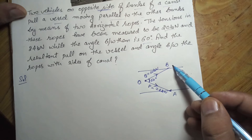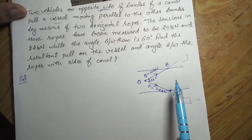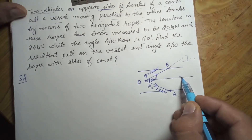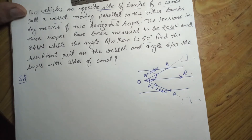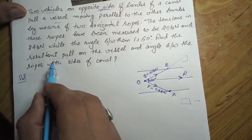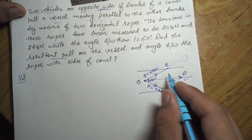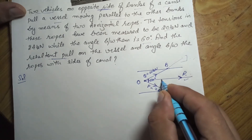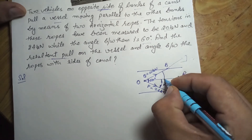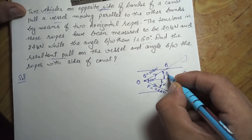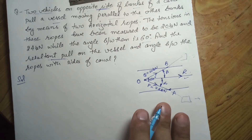Since both vehicles pull horizontally, the vessel will move in the direction of the resultant, which we represent as R. We need to calculate this resultant pull and also find the angles — alpha (between the resultant and force P) and beta (between the resultant and force Q). As per the diagram, we can clearly apply the parallelogram theorem.